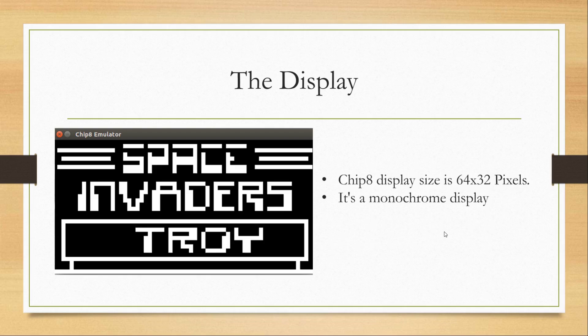The display is probably the most complicated part of the Chip 8, mainly because of sprites. The Chip 8 has a display size of 64 by 32 pixels. It's a monochrome display, meaning pixels can only have one color — they're either on or off. White means the pixel is on, black means it's off. This is a screenshot from Space Invaders on the Chip 8 emulator.